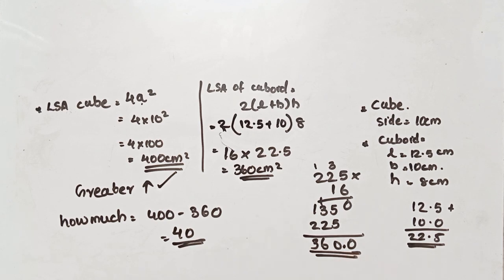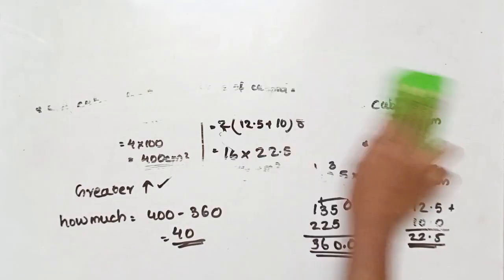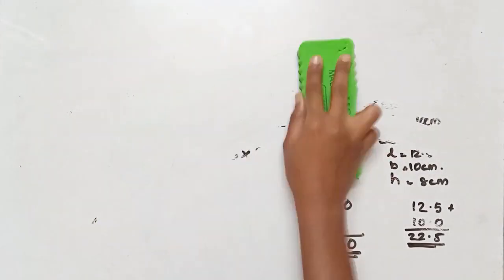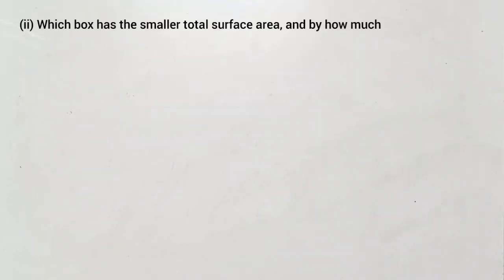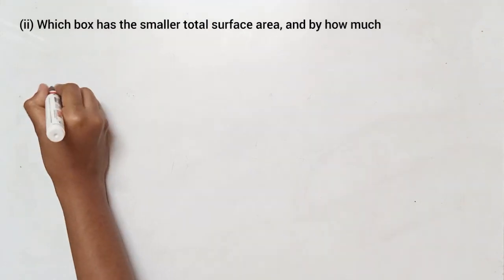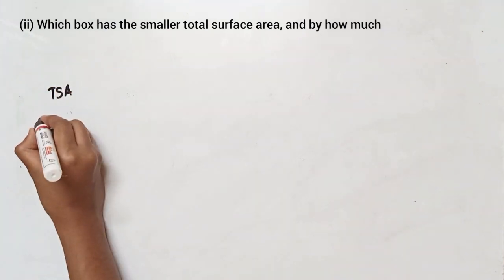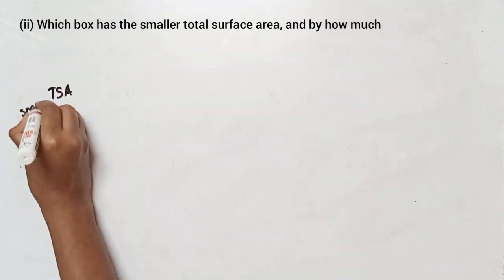This was the first part. Now we are going to the second part of the question. Which box has a smaller total surface area and by how much? We need to find the total surface area of each box.